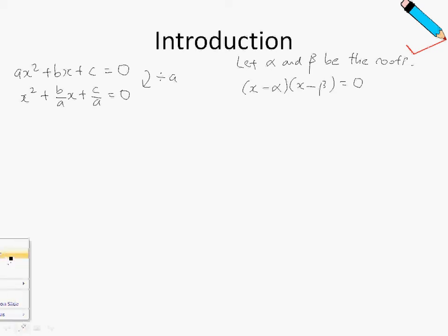So what I'm going to do next is to expand out this equation. So x times x will give me x squared minus alpha x minus beta x plus alpha beta equals to zero. Factorizing the equation, I'll get this.